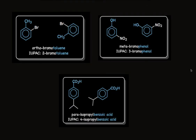Here's a third example: this is para-isopropyl benzoic acid. There's a carboxyl group attached directly to the benzene ring, which is defined as benzoic acid — you see why you need to memorize those structures. Because the isopropyl group is directly across the ring from the carboxyl group, it's para-isopropyl benzoic acid. In IUPAC nomenclature, we start counting with carbon 1 where the carboxyl group is and go around to the isopropyl group.